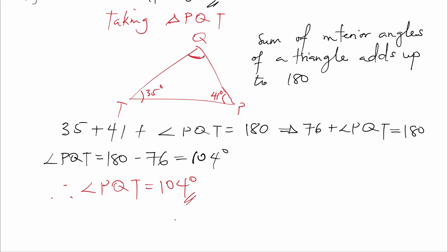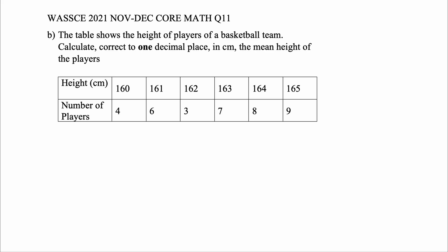So this brings us to the end of question 11a. Don't forget to like and subscribe, and don't hesitate to leave your questions in the comment section. We'll be moving on to question 11b. The table shows the height of players of a basketball team. Calculate, correct to one decimal place in centimeters, the mean height of the players.